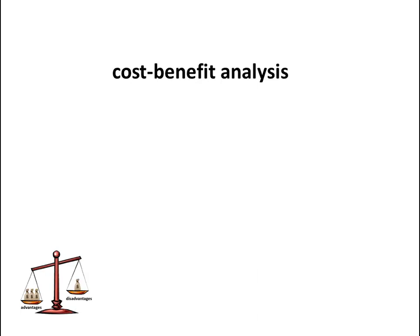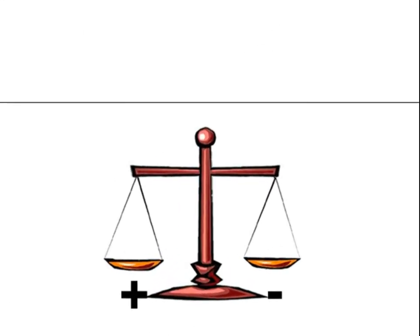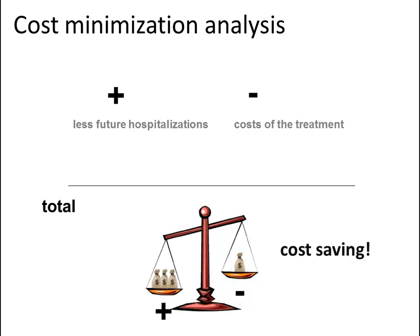One kind of analysis is the cost minimisation analysis. A cost minimisation analysis only looks at used resources, at costs, and ignores health effects such as life years gained and increased quality of life. Benefits included could be savings from lower future burden of disease, such as fewer future hospitalisations. The cost could be the cost of the treatment. If the cost of the treatment is compensated for by future savings, the treatment is said to be cost-saving, meaning that implementing the treatment would result in more money.